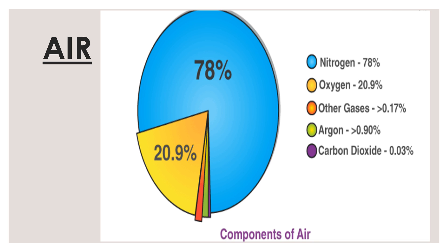All living organisms on Earth need air to live. Green plants use carbon dioxide from the air to make food and give out oxygen, which is used by living organisms for the process of respiration. Gases in the atmosphere are cycled, so there is a balance of gases in the air. Unfortunately, human beings are disturbing this balance through activities like deforestation and excess burning of fossil fuels, which cause an increase in carbon dioxide in the atmosphere.